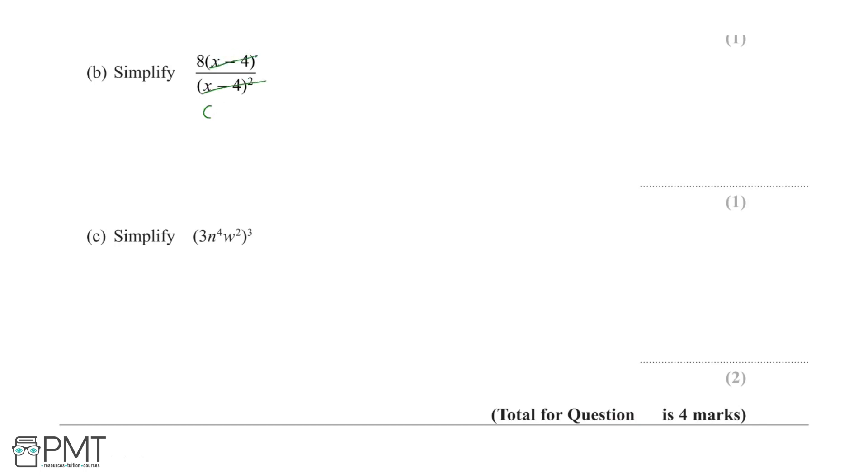We can cancel through by 1 lot of (x-4) to leave (x-4) on our denominator. And this means our final answer will be 8/(x-4). This part is worth 1 mark and you get 1 mark for the correct final answer.